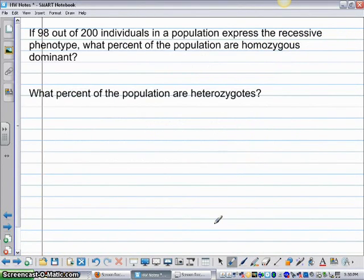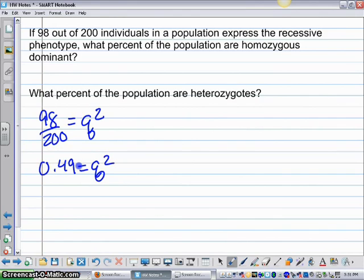So, if 98 of 200 individuals in a population express the recessive phenotype, what percentage of the population are homozygous dominant? So the way that we would calculate that is 98 out of 200 is going to equal our Q squared value. So that's going to be 0.49 because 98 divided by 200, 0.49 equals Q squared. So Q is going to be the square root of 0.49 which is 0.7.